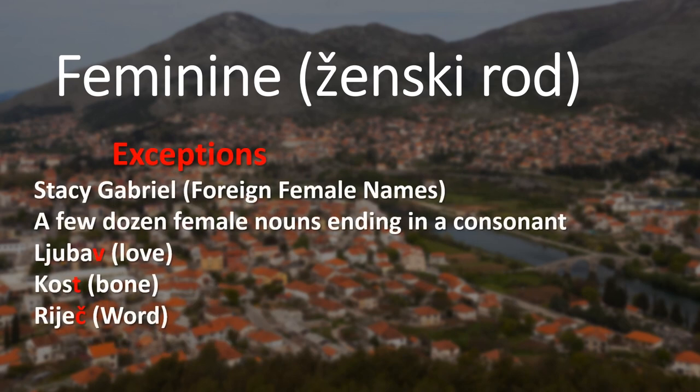Exceptions for ženski rod include foreign female names — for example, Stacy or Gabriel. These do not end in A, but we still treat them as feminine nouns. There are also a few dozen female nouns that end in a consonant, such as ljubav meaning love, obala meaning coast, kost meaning bone, and rječ meaning word. All of these are feminine nouns, although they don't end in vowel A.